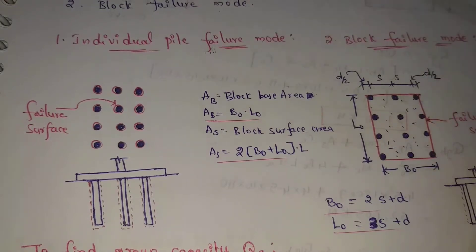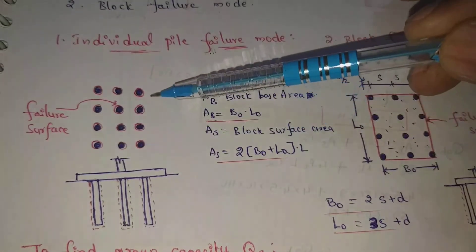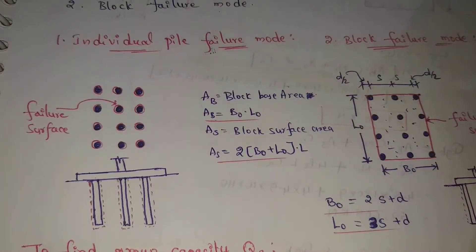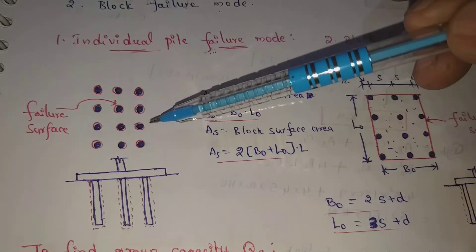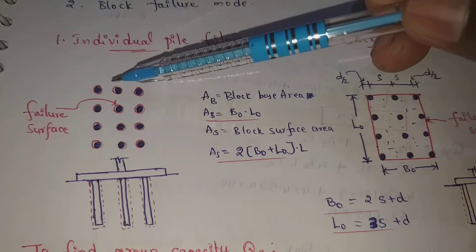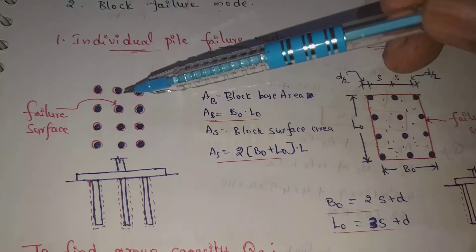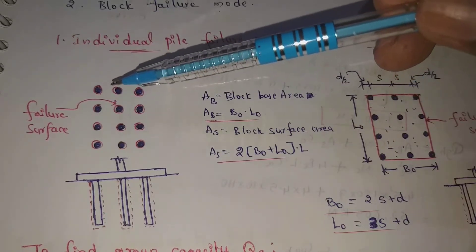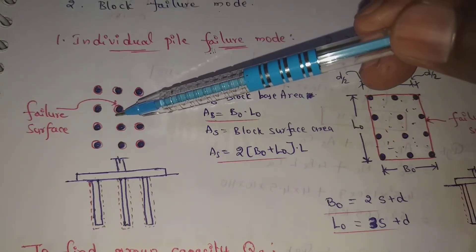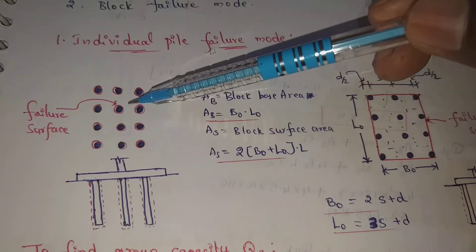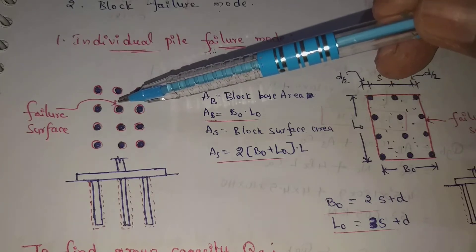In individual pile failure mode, this group is not treated as a group of piles. Each and every pile has its own surrounding surface failure. This is the surrounding surface — that is the individual pile failure mode.